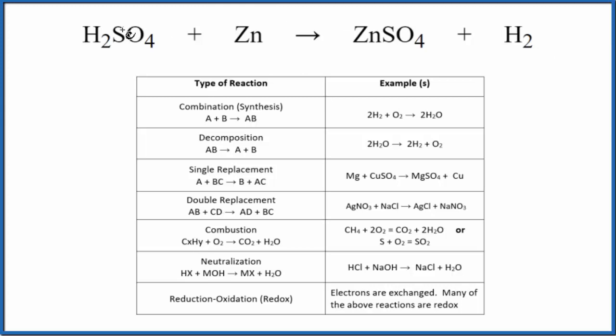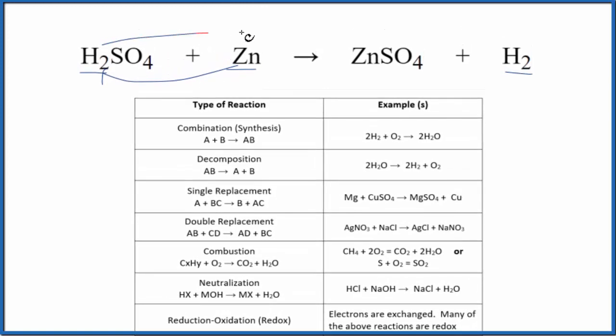When we look at the pattern here we see the hydrogen and the zinc. The hydrogen starts out with the sulfate but it ends up by itself. The zinc starts by itself and ends up with the sulfate. So the zinc has pushed out the hydrogen. This looks like a single replacement reaction. The zinc has replaced the hydrogen so we have zinc now with the sulfate and the hydrogen's all by itself.